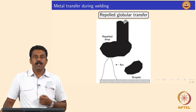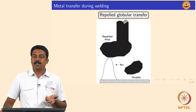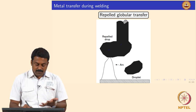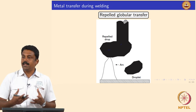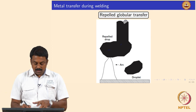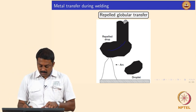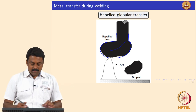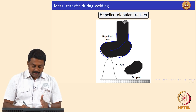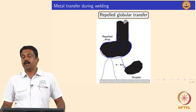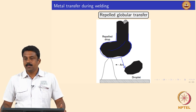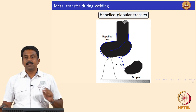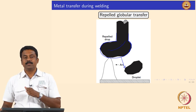If you increase the current slightly further it becomes rippled. The globular shape changes to rippled globular because of increasing current — some Lorentz force is generated and that changes the magnetic field inside the droplet. It changes the shape of the droplet into a shape like the shoe of a clown or buffoon, and after attaining critical mass, gravity pulls it down. Increasing from globular to ripple transfer and then further would show a change in transfer mode.